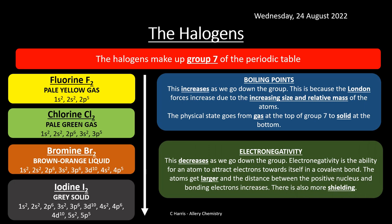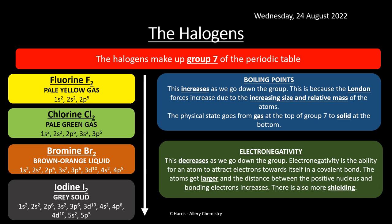Electronegativity decreases as we go down the group. Electronegativity is the ability for an atom to attract electrons towards itself in a covalent bond. As atoms get larger, the distance between the positive nucleus and the bonding electrons increases and there is more shielding. Fluorine is the most electronegative element in the periodic table. As we go down to iodine, increased shielding weakens the ability to pull electrons towards itself.